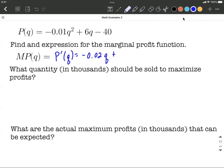For our next term, it's 6Q initially. So it's just going to be 6 for its derivative. And then the 40, its derivative is going to be 0 because it's a constant.